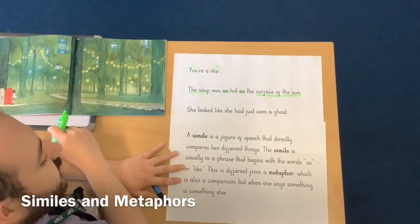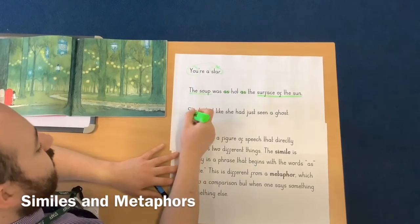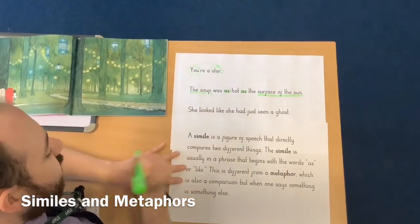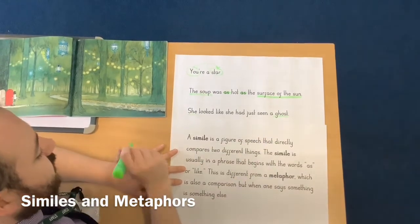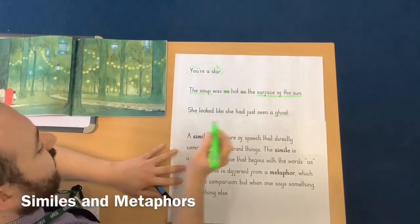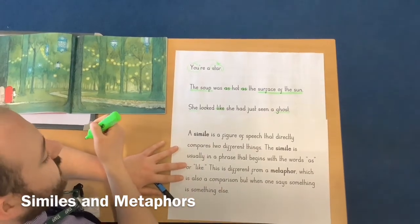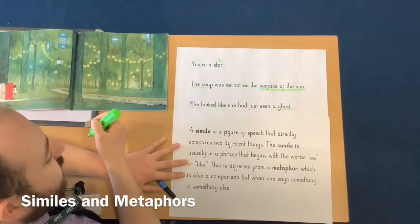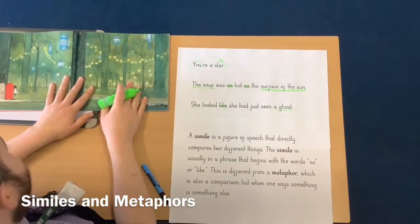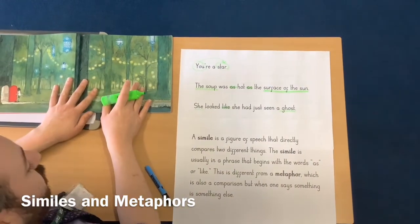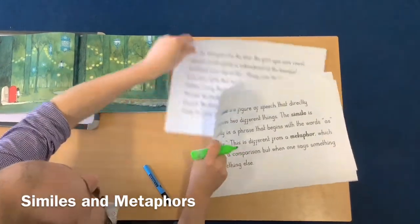'She looked like she had seen a ghost.' We are comparing the girl and how she looks like she has seen a ghost, and that word 'like' again tells us that it's a simile. So, using this fantastic picture that we've got in this book, let's take a look at some examples that refer to this image.